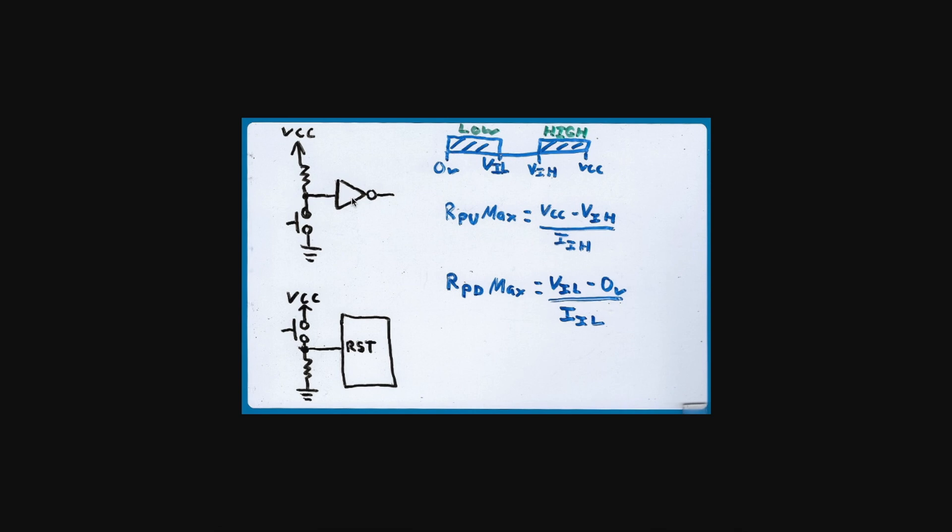Sometimes the choice between a switch to ground or VCC is arbitrary, but usually push buttons on logic circuits are connected to ground and there's an associated pull-up resistor.